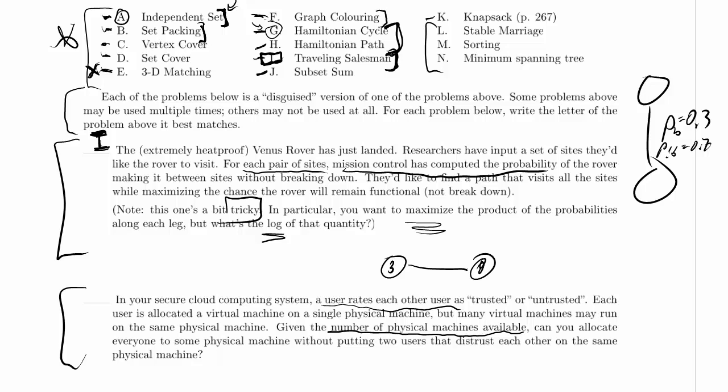And graph coloring as well. Graph coloring seems really promising to me, because we're labeling each of the nodes with the physical machine that it goes on, and we've got K physical machines that we can put them on. So that sounds tremendously promising to me.